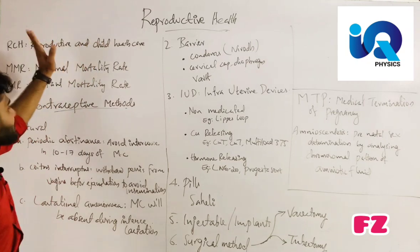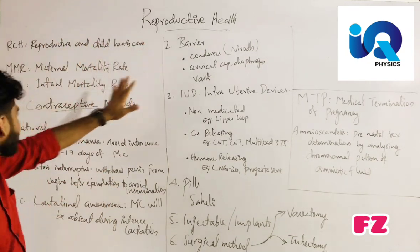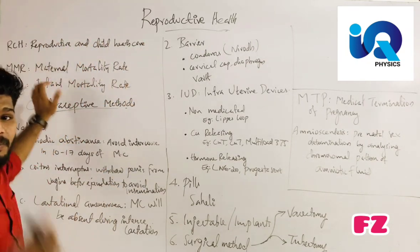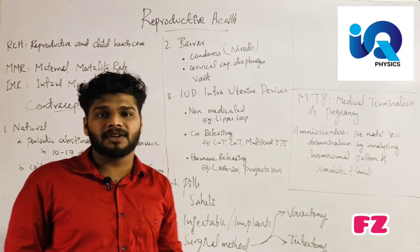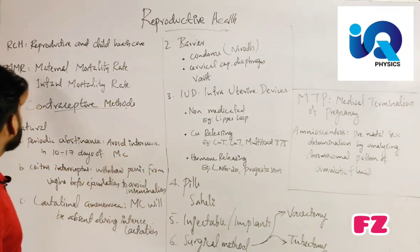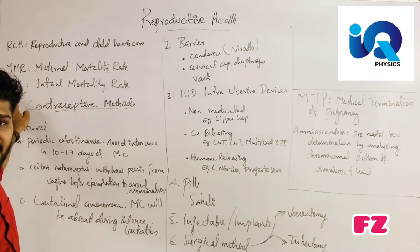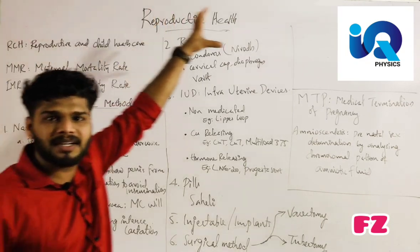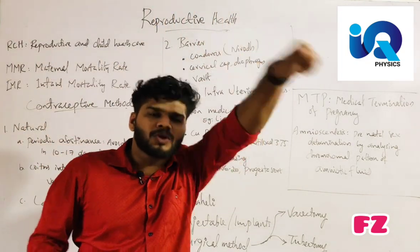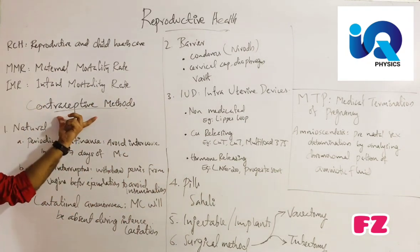We will cover RCH — Reproductive and Child Health Care — and topics like population explosion. Then MMR, that is Maternal Mortality Rate, and IMR, that is Infant Mortality Rate.